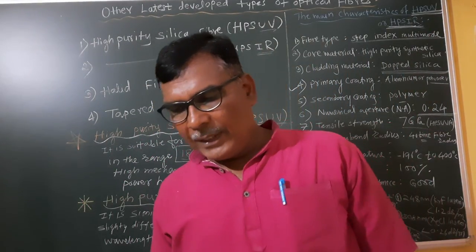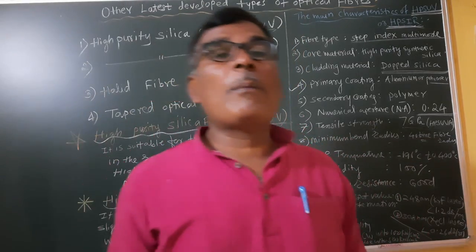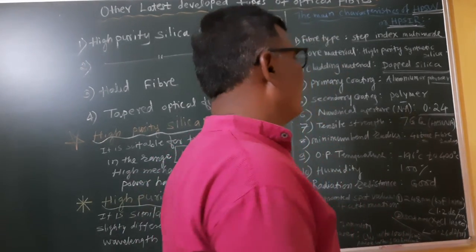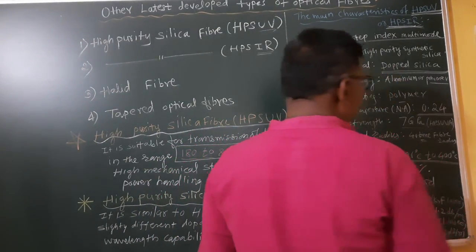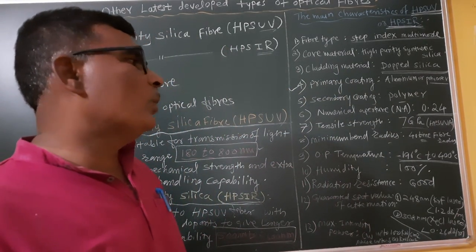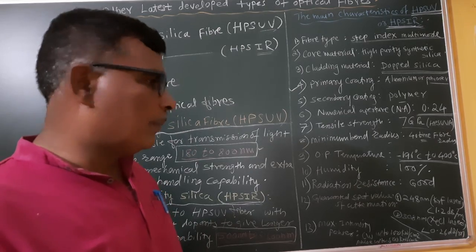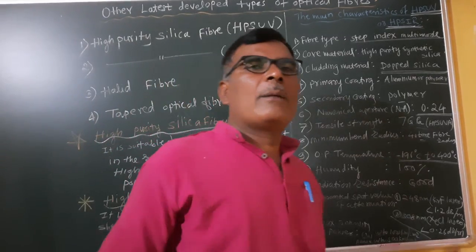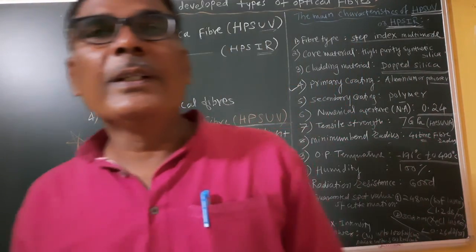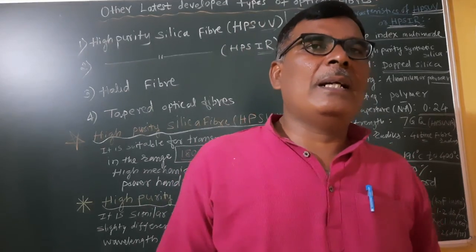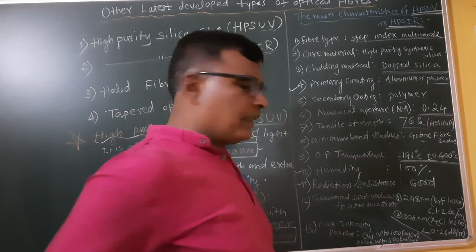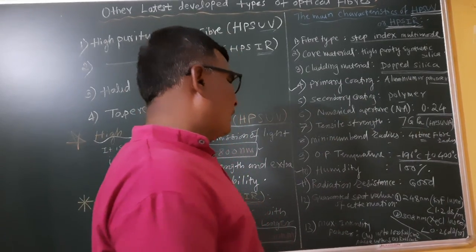The operating temperature range for this type of fiber is minus 196 degrees Celsius to 400 degrees Celsius. This is the maximum operating temperature range for HPSUV or HPSIR. Humidity tolerance is 100 percent, and radiation resistance is good.